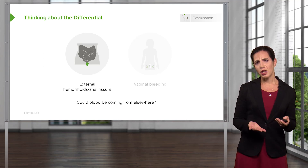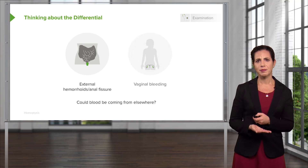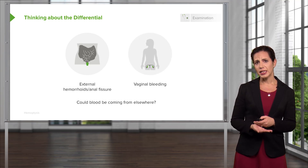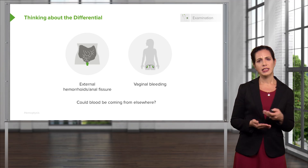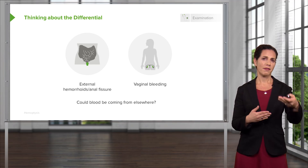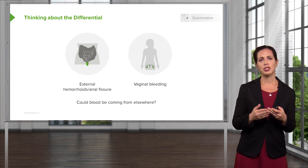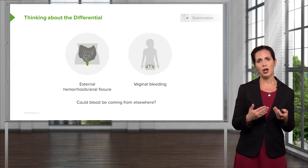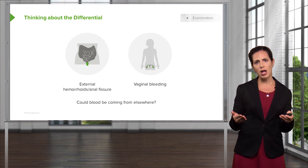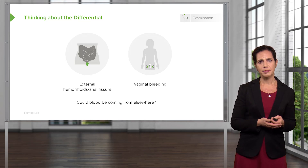External hemorrhoids or an anal fissure can cause blood to be mixed in with the stool. Vaginal bleeding is another consideration — for patients with heavy vaginal bleeding, it can sometimes be difficult to determine whether the bleeding is coming from the vaginal area or the rectal area, so that should be kept on the differential.